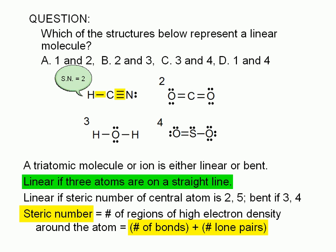The single bond counts as one region of high electron density, and the triple bond counts as another. For structure 2, this double bond on the left counts as one region of high electron density, and the double bond on the right counts as another. Therefore, the steric number for the carbon atom in structure 2 is also 2. There are two groups of electrons sticking out of the carbon atom.